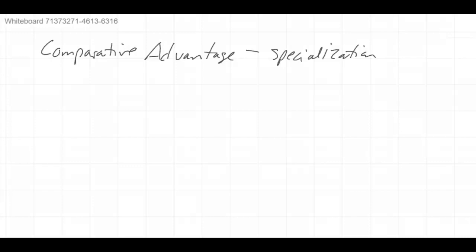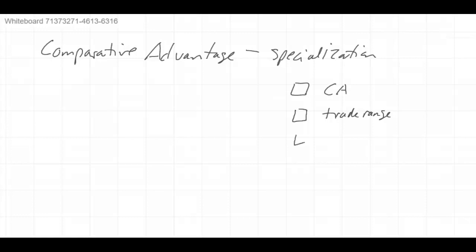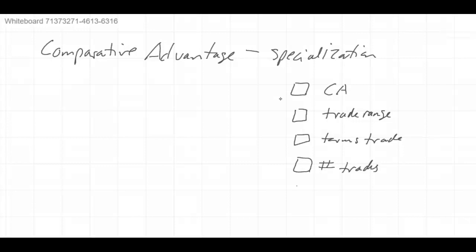For comparative advantage, there are kind of five steps I like to go through. The first one is find the comparative advantage. Second is find the trade range. Third, find the terms of trade — that's going to be like the negotiated levels of how much of good one for good two. Fourth, find the number of trades. And the last one is finding the economic gains.